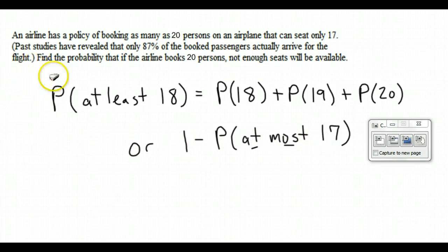If you can't see that, then just sketch a little picture of it. 1, 2, 3, 4, all the way to dot, dot, dot, 16, 17, 18, 19, 20. We're looking for at least 18. That's these three right here. Binomial CDF starts at 0 and goes to where you tell it to stop. So it would start at 0 and go to where we tell it to stop.